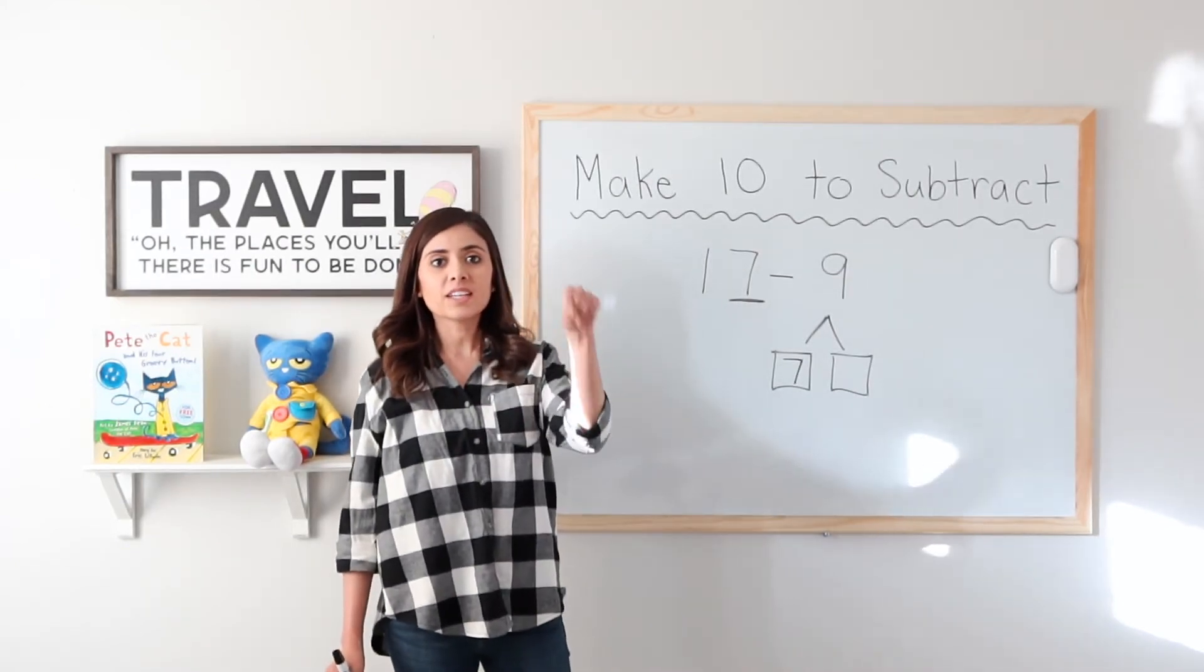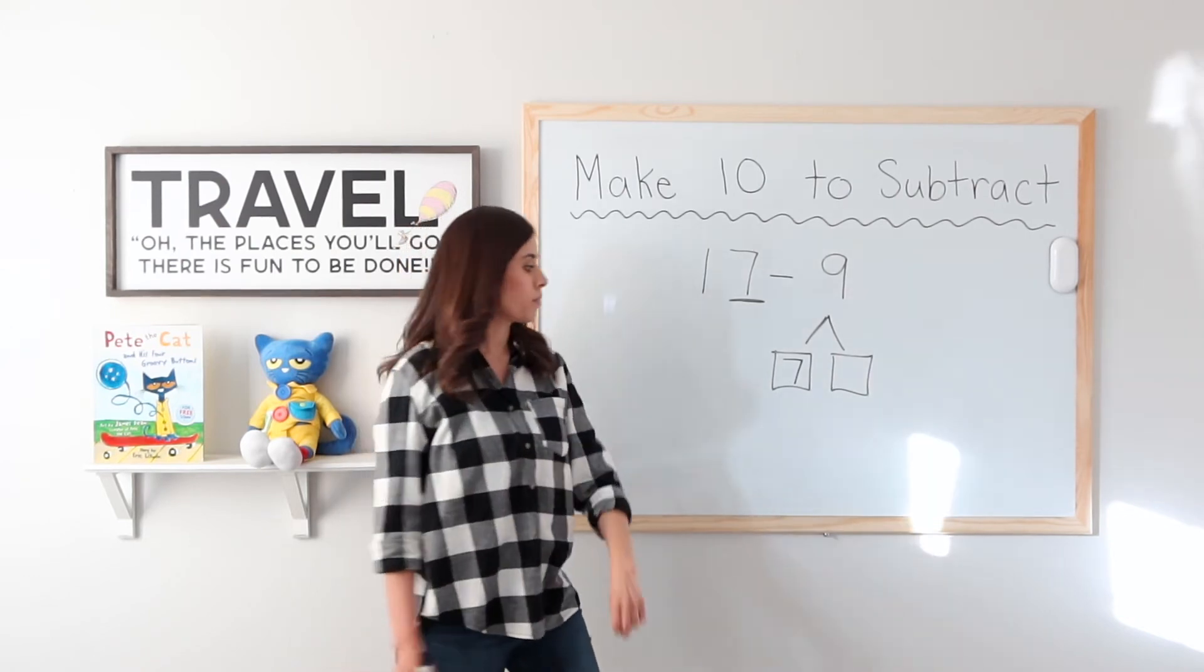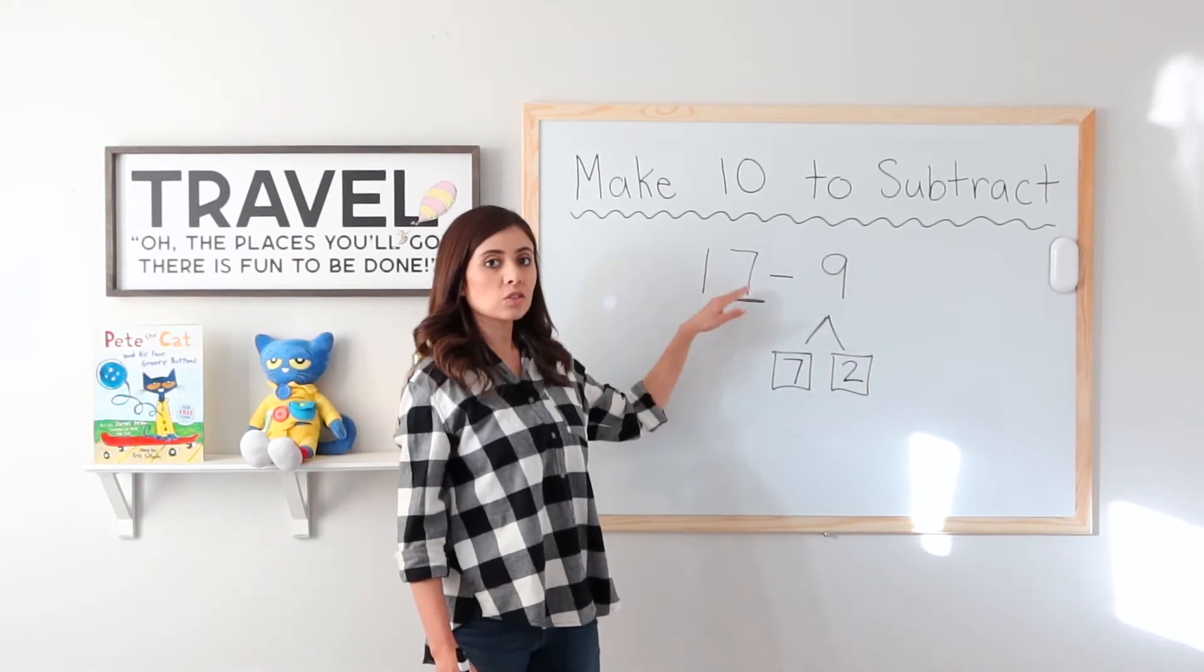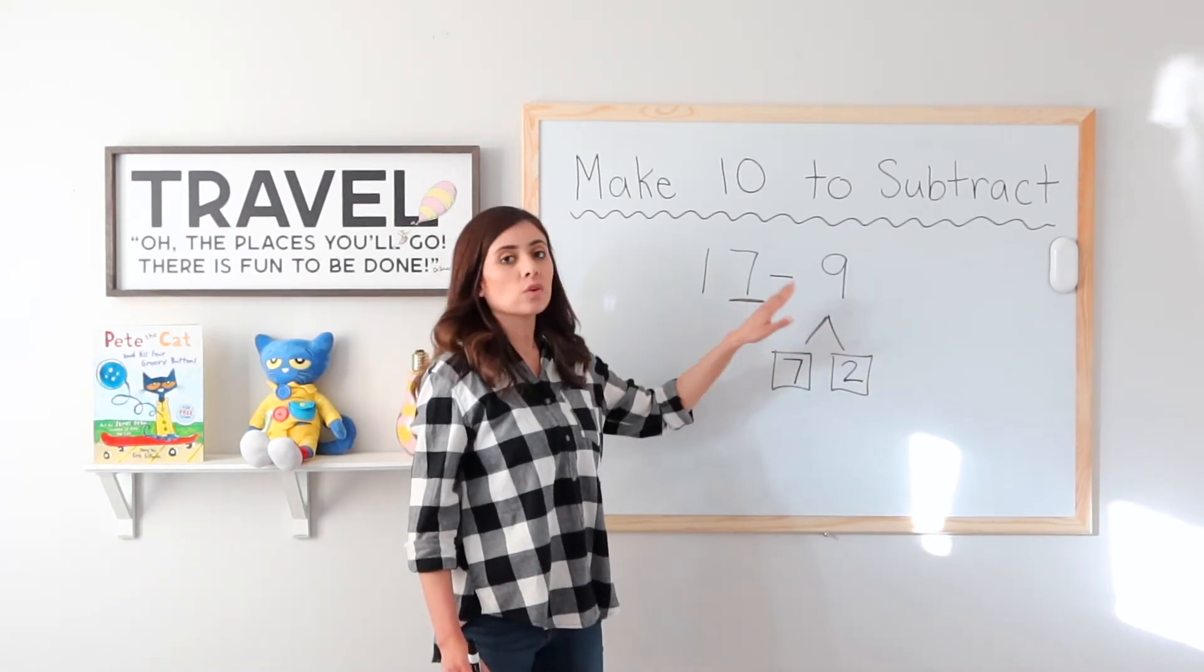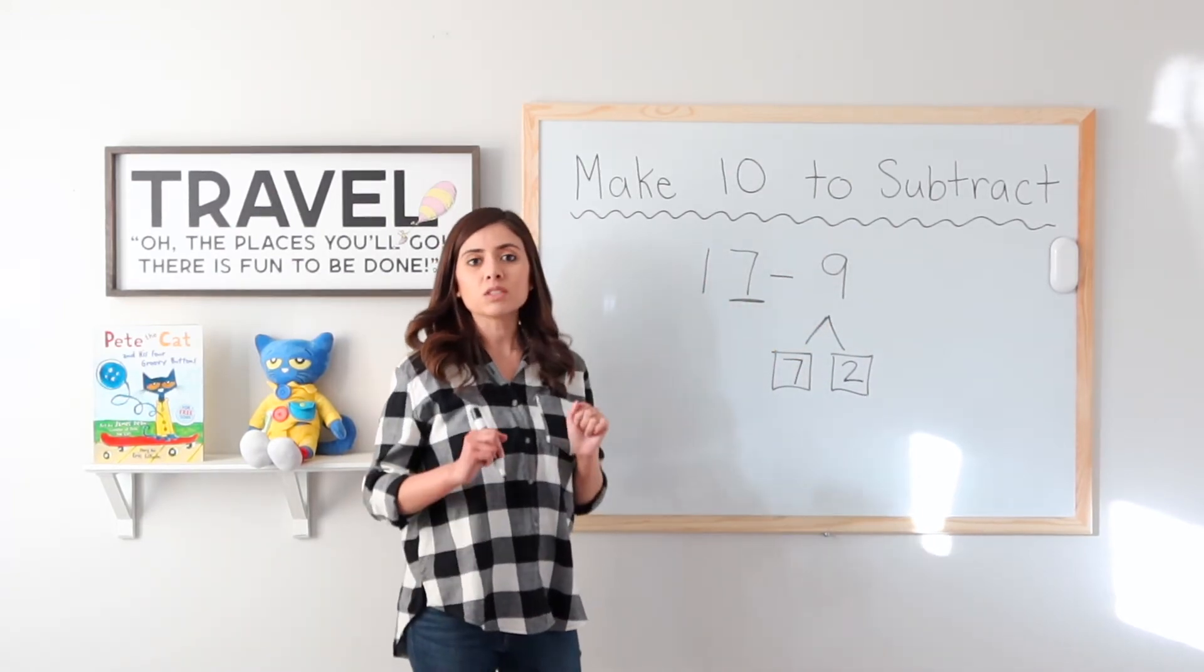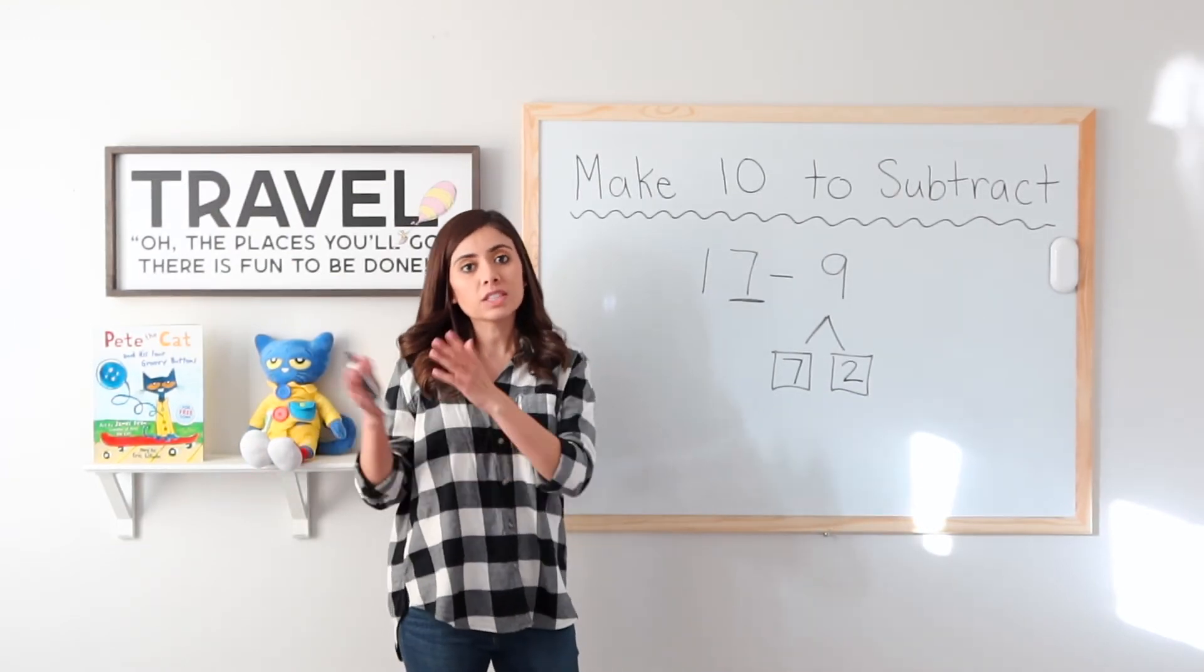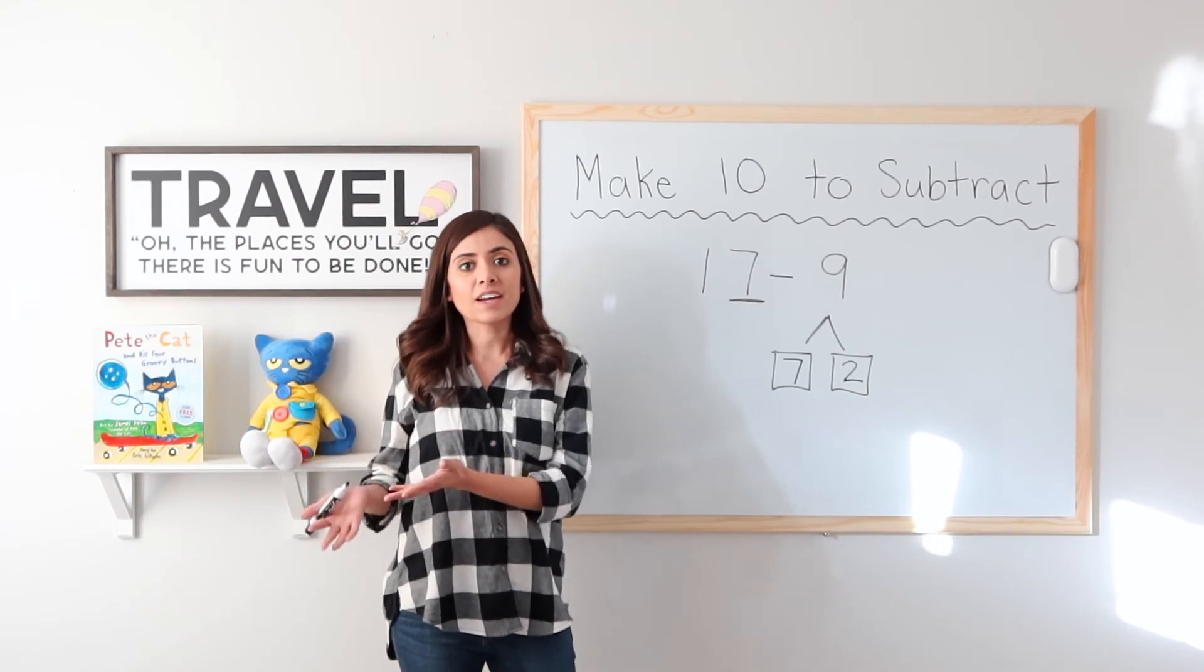Ready? 7, 8, 9. 2. 7 plus 2 equals 9. So I'm still doing 17 minus 9, only now I'm deciding, you know what? I'm going to do it first. I'm just going to take away 7 and then I'm going to take away 2. But all together, I'm still taking away 9.